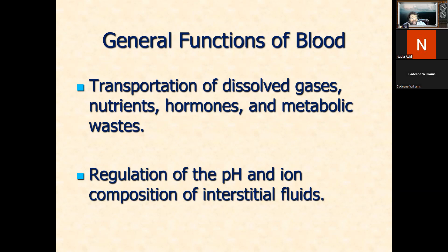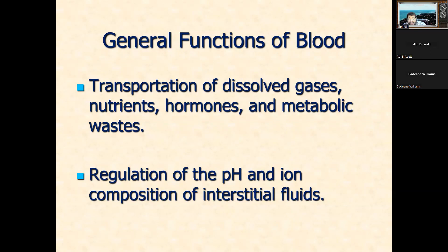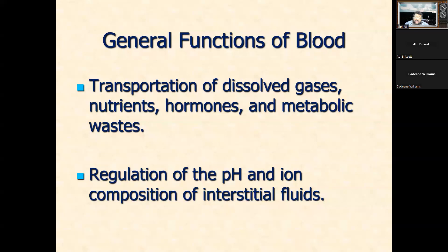Can you name three types of metabolic waste transported by the blood? Urea - one is urea, absolutely. Need two more. Carbon dioxide - you make carbon dioxide, that's also metabolic waste. Is lactic acid one? Lactic acid is transported to the liver where it is broken down - I agree with you. Very good. Another thing blood does is it regulates the pH and ion composition of not only the blood itself but also of interstitial fluids. Hopefully everybody remembers - interstitial fluids are functionally the same as tissue fluid. These are the fluids that you'll find around the tissue.